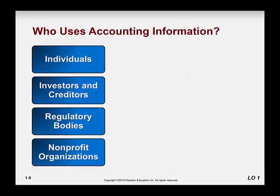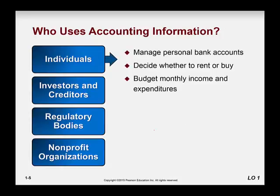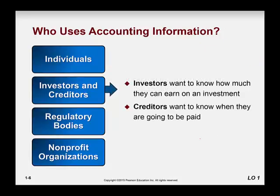So who uses this accounting information? Well, as you can see, these individuals. First and foremost, we have individuals — you probably all have bank accounts, maybe checking and savings accounts. And if you rent, possibly because you're in school, you have a budget and monthly expenses. Investors want to know about what they are investing in — usually through stock, such as Apple — to make sure they get dividends and a return. And creditors are usually banks, financial institutions, and they want to make sure that they can get paid.